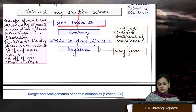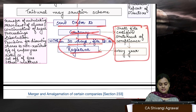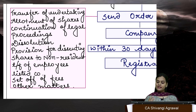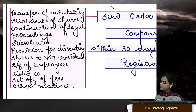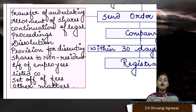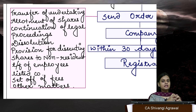After the scheme is sanctioned, the order is sent to the company, and the company files it with the registrar within 30 days. The points which must be there in the scheme — otherwise the tribunal can pass orders in this regard — include: first, transfer of undertaking: whenever a scheme of merger or amalgamation takes place, there is transfer of assets and liabilities, and you must give adequate information about what is going to be transferred and how. Second, purchase consideration: what shares are going to be allotted.